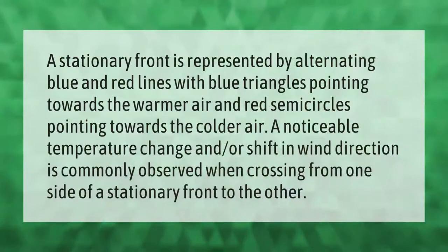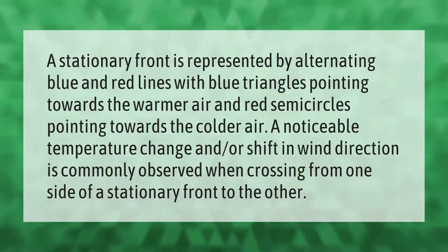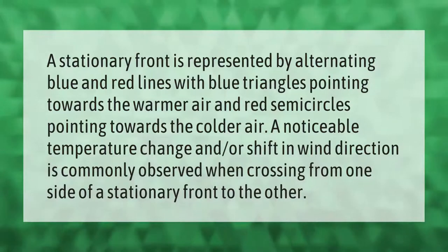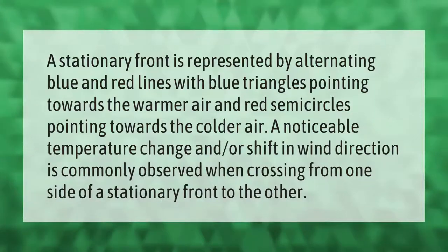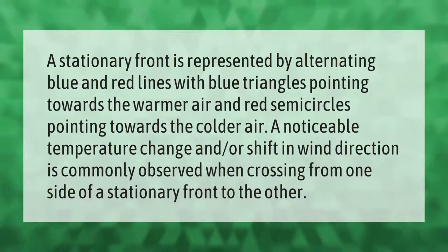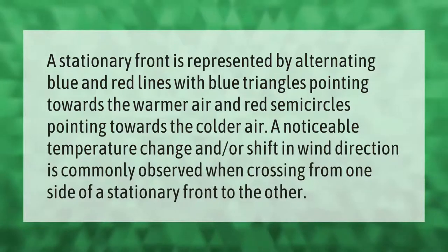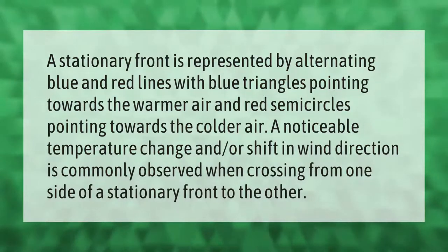A stationary front is represented by alternating blue and red lines, with blue triangles pointing towards the warmer air and red semicircles pointing towards the colder air. A noticeable temperature change and/or shift in wind direction is commonly observed when crossing from one side of a stationary front to the other.